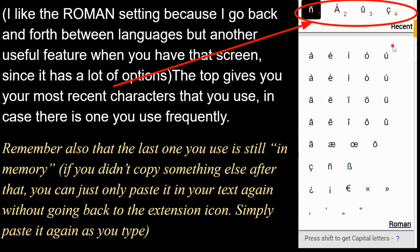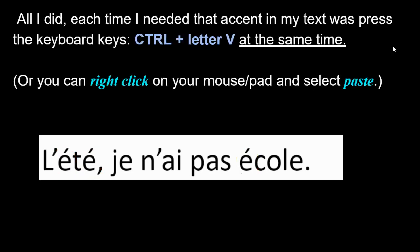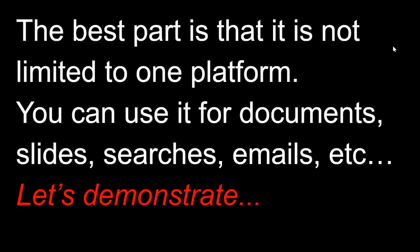One convenient feature: whatever accent you last copied stays in memory as long as you haven't copied anything else. For example, for the sentence 'je n'ai pas école,' I needed three É-aigu accents — I just hit Ctrl+V three times without going back to the dialog box each time.